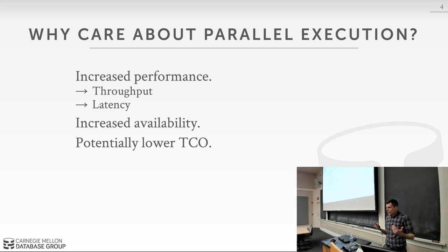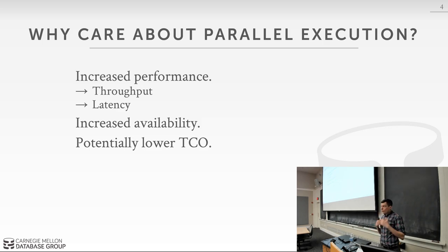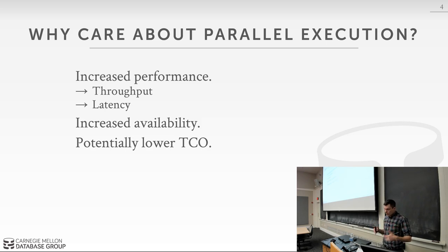We'll see this when we talk about transactions with multiple threads updating the database. If you have to go get a page from the buffer pool and it doesn't have it, you have to stall and go out to disk — you want to let other things keep running and make forward progress. This is the state of the world now: Moore's law is over, our CPUs are getting more cores, we're getting more storage devices, and cloud storage is cheap. We want to take advantage of all these things inside our database system.